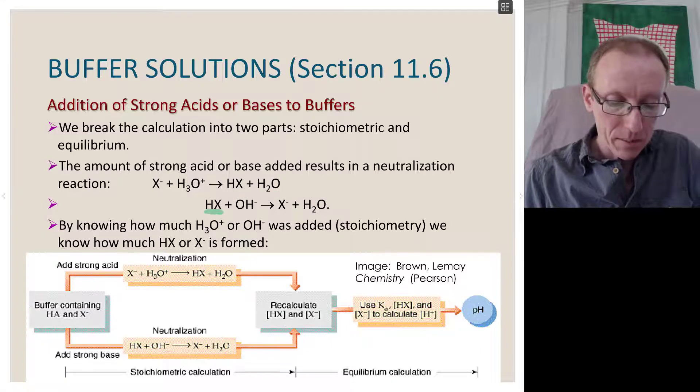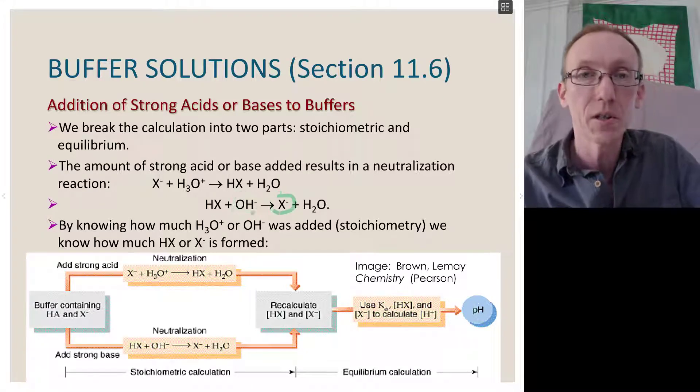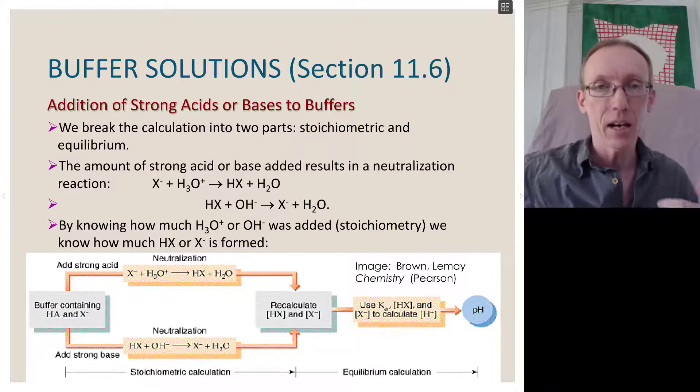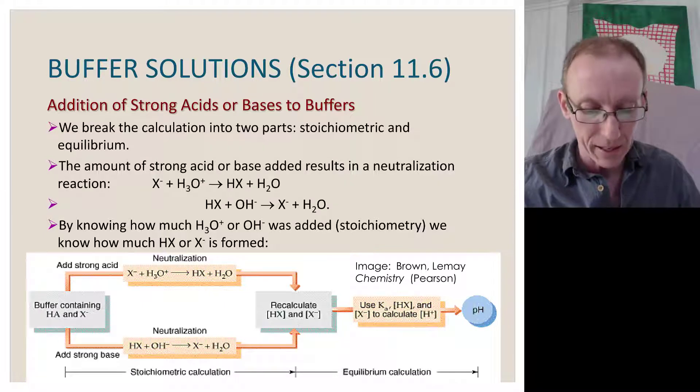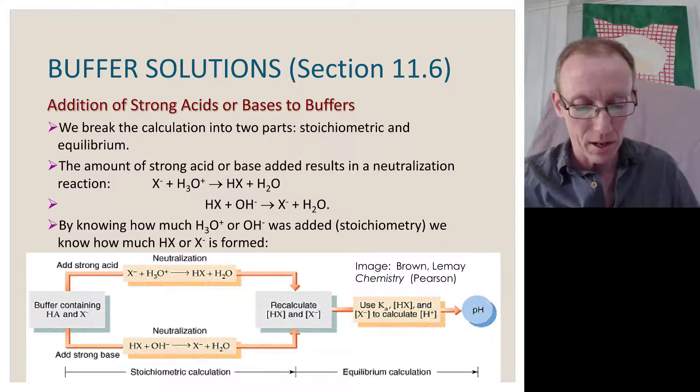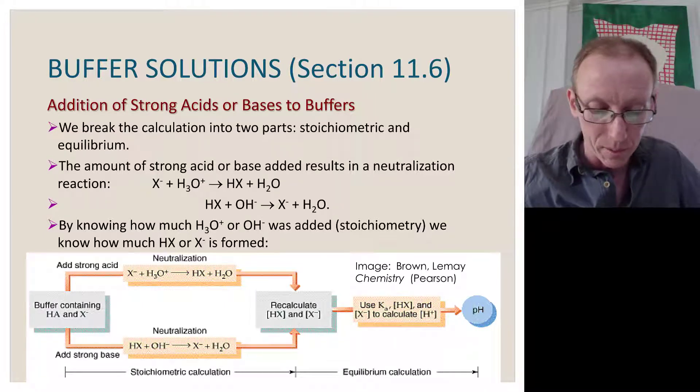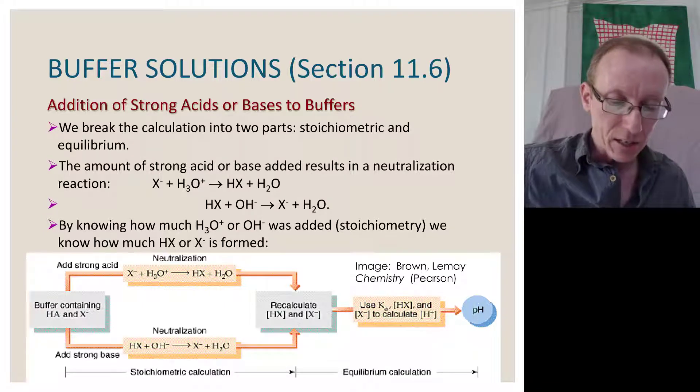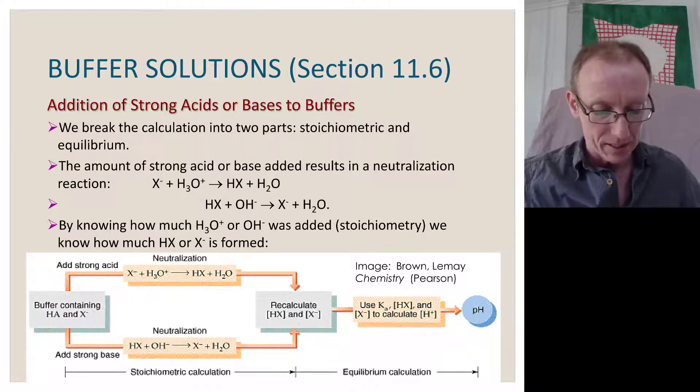If we take our weak acid plus a strong base like hydroxide, we'll generate the conjugate base and water. By knowing how much strong acid or strong base, H3O+ or OH-, we've added, the stoichiometry, we know how much of the HX or X- is formed in this process.